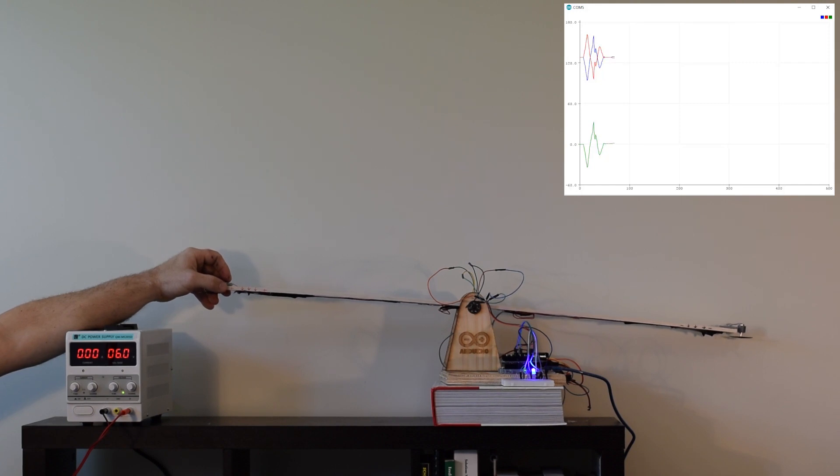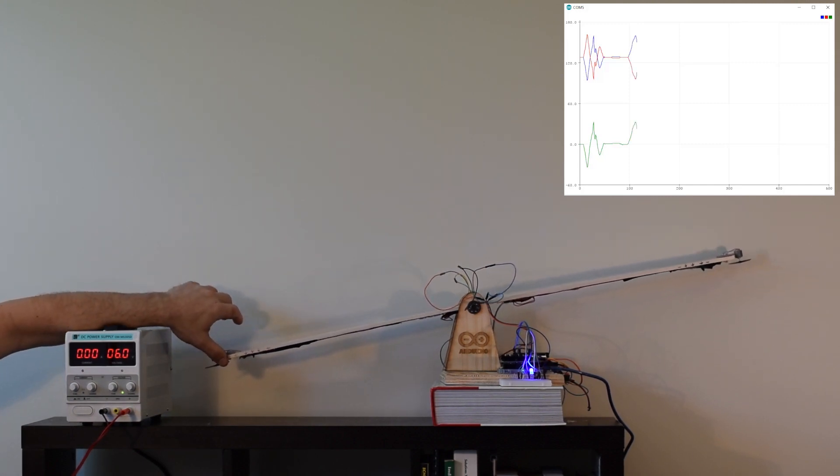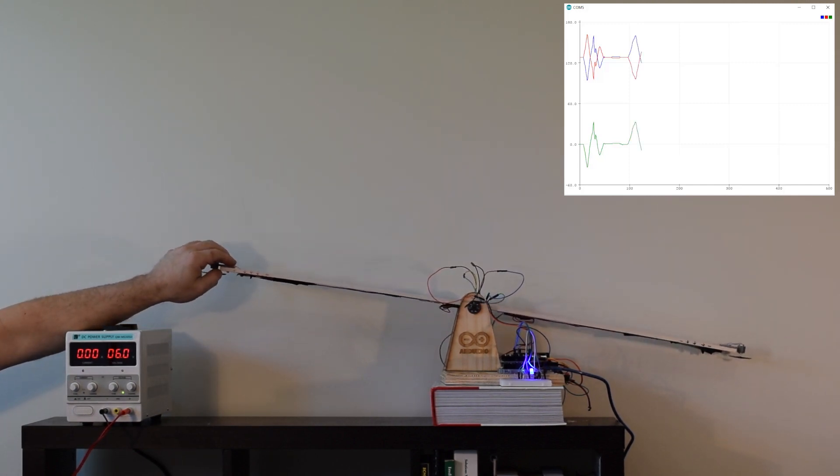The first problem I encountered was that the system was slow to respond on one side. I printed the input PWM signal to both motors and the output value from the PID equations to the serial plotter oscilloscope.